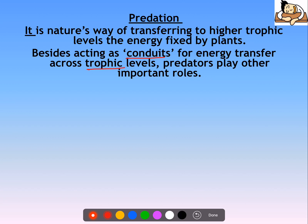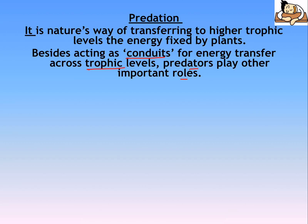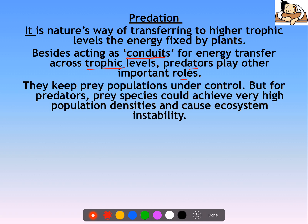Predators play important roles. Besides energy transfer, they keep prey populations under control. Agar tiger nahi hoga, toh deer ki population out of control ho sakti hai — itni zyada bhi ho sakti hai ki ecosystem uski population ko support hi na kar paye. So nature's way of keeping prey populations under control is also a function of predation, which if unchecked can cause ecosystem instability.